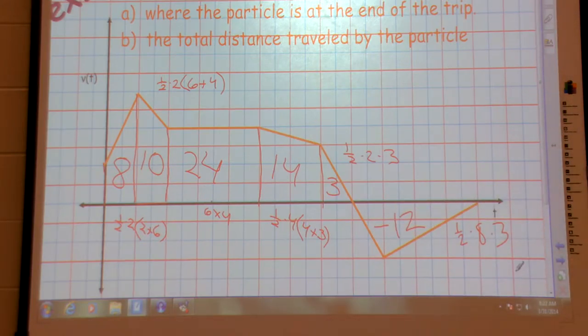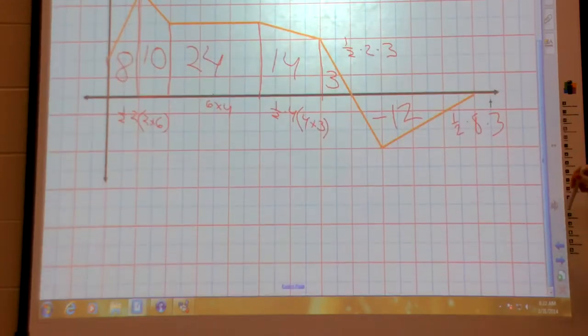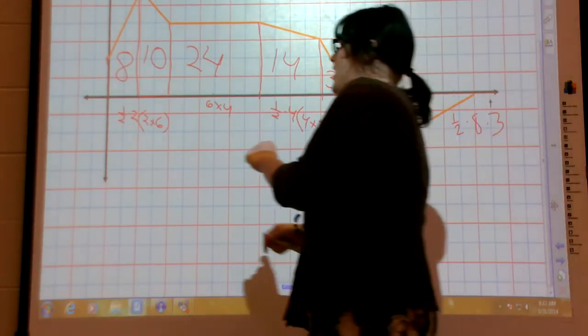It is below the curve. That is the big difference between part A and part B. Because if I want the displacement now I include the negative. So let's add these up.